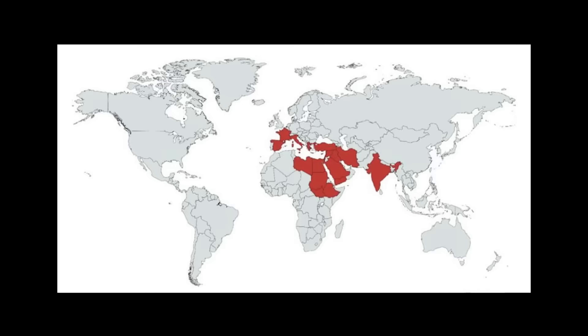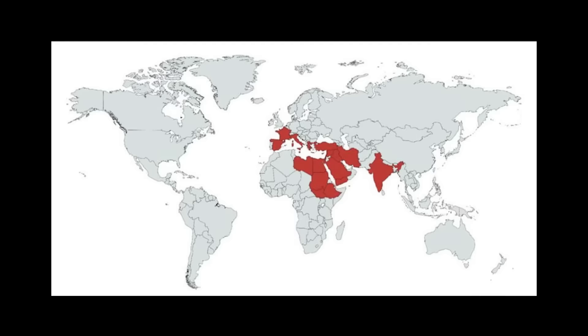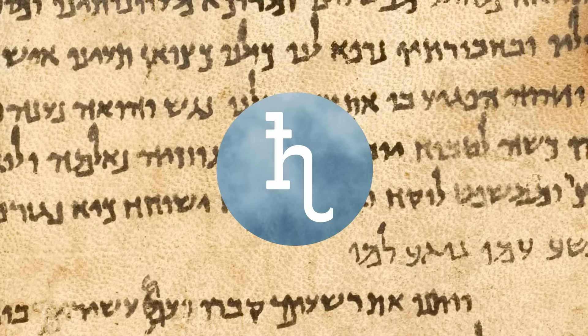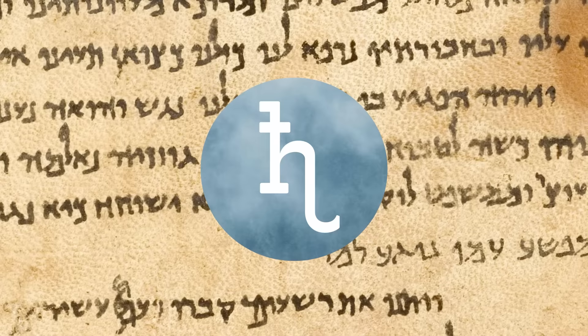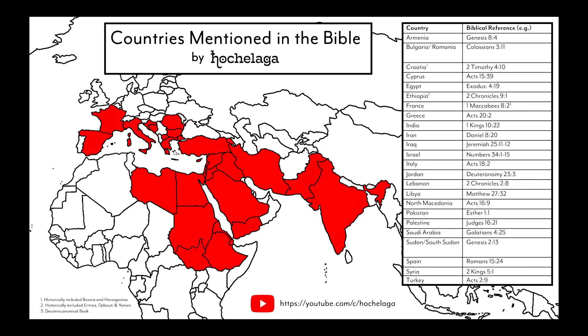On social media recently, I saw this map going about. In red are all the countries mentioned in the Bible. The map has been posted and reposted now for a few years, and in the comments below there was some confusion. It doesn't include any biblical references or explanation. And how is France there and not Jordan? I thought I'd put my degree in Biblical history and languages to good use, and investigate this question for myself.